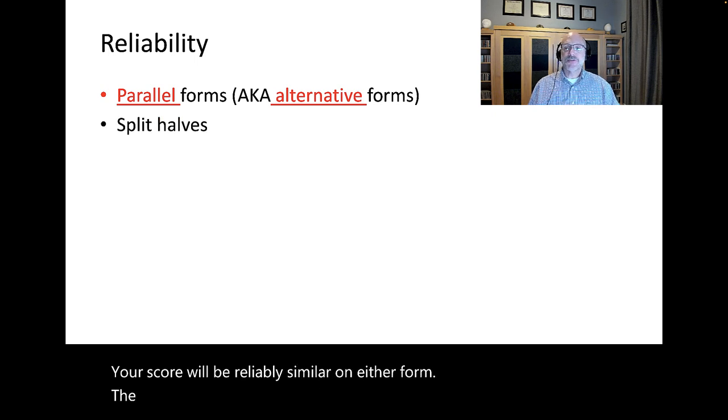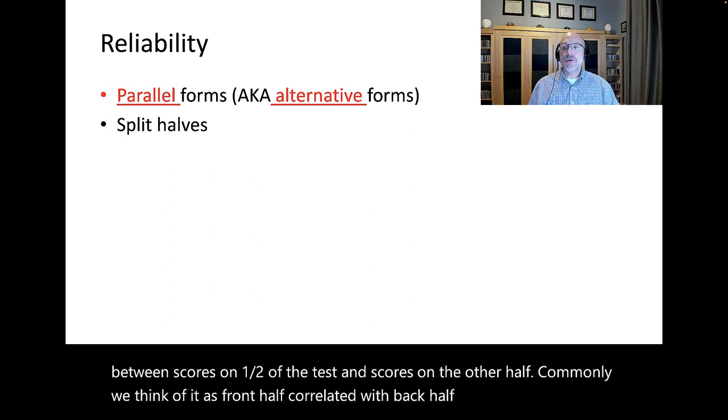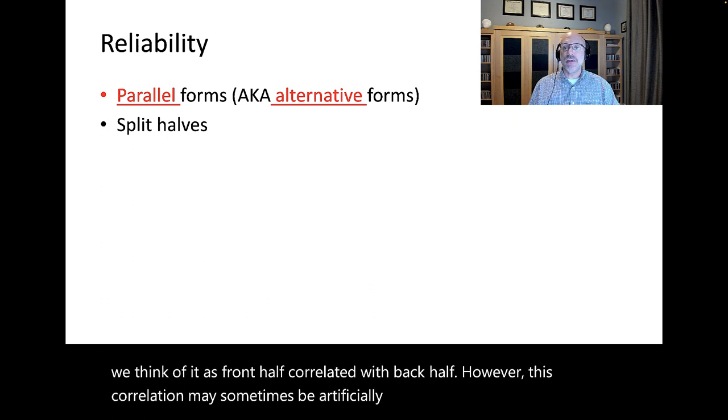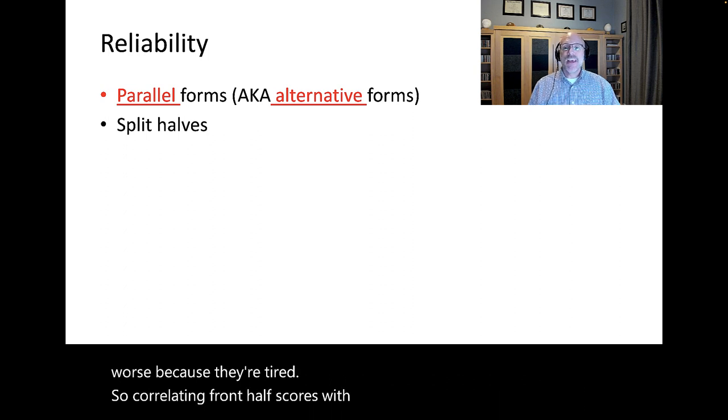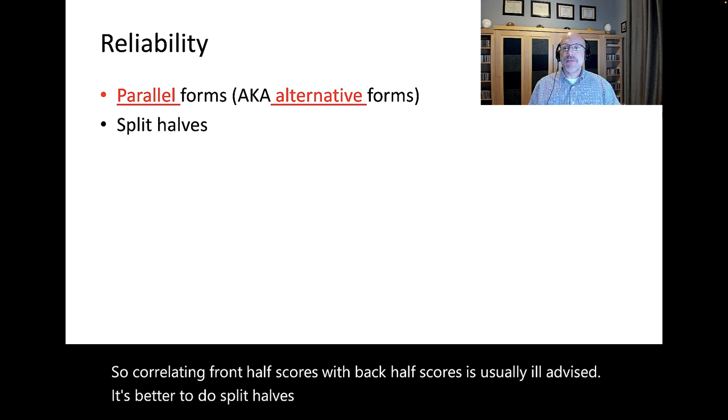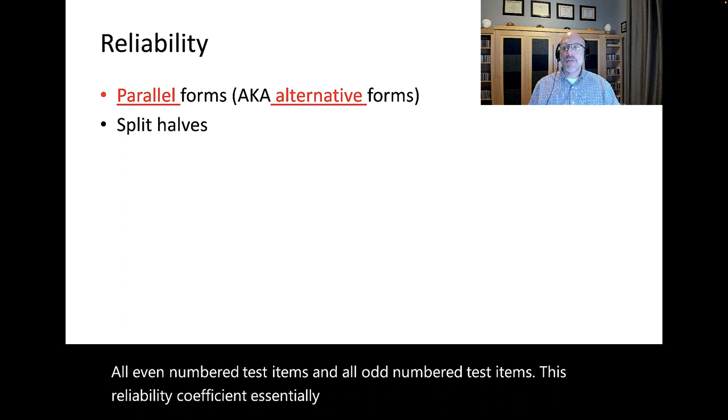The second is split halves reliability, which is simply the correlation between scores on one half of the test and scores on the other half. Commonly, we think of it as front half correlated with back half. However, this correlation may sometimes be artificially deflated because of fatigue. It's better to do split halves reliability by examining the correlation between all even-numbered test items and all odd-numbered test items. This reliability coefficient essentially examines how well the various parts of a test measure the same thing.